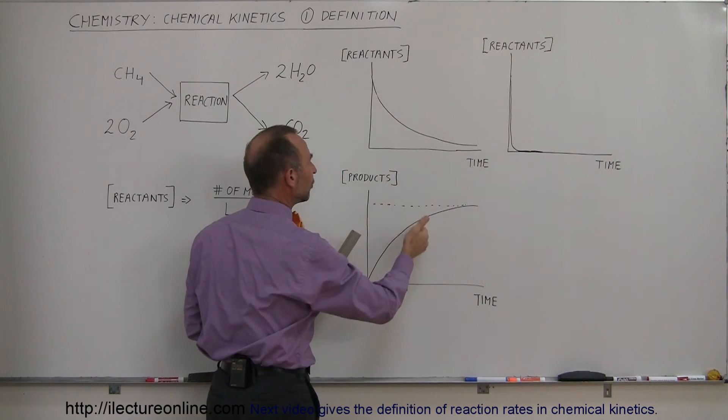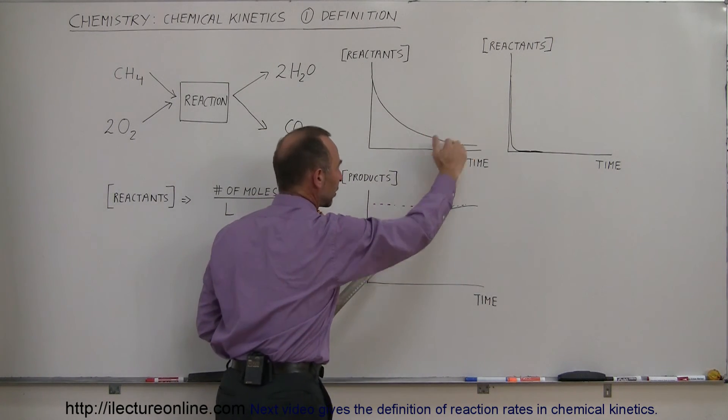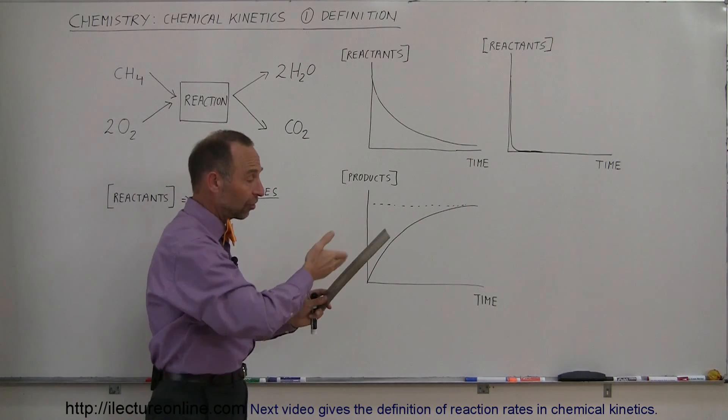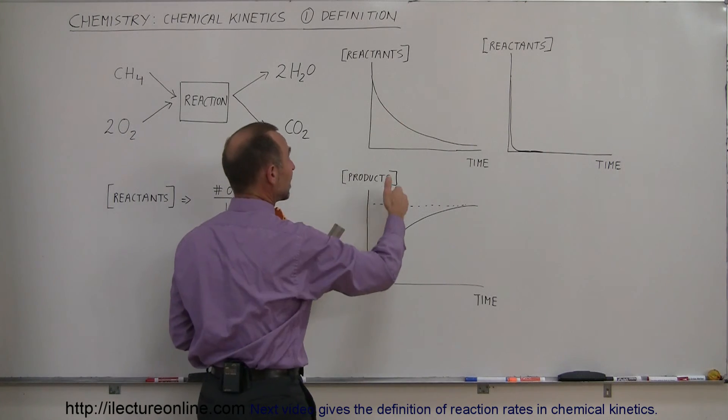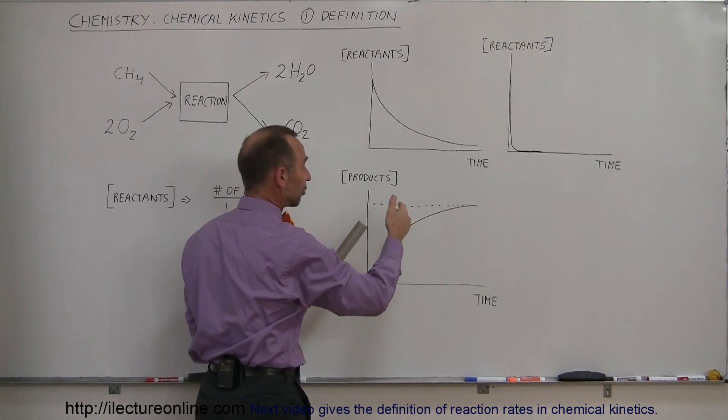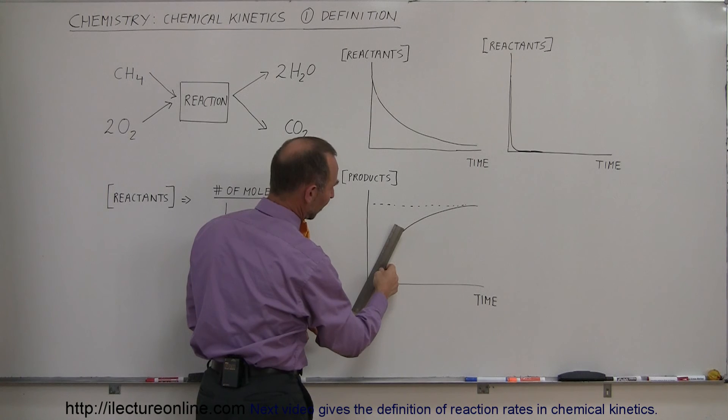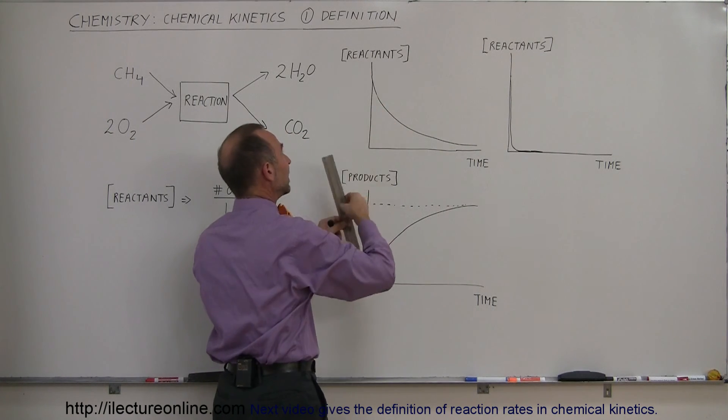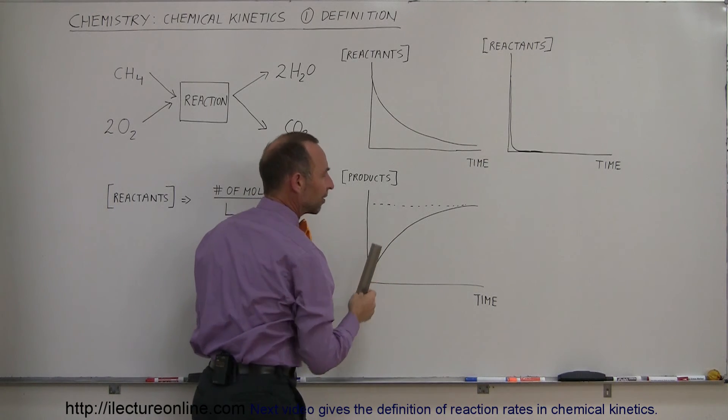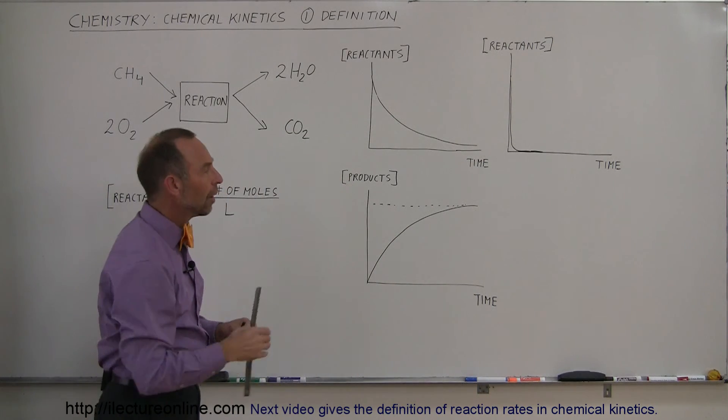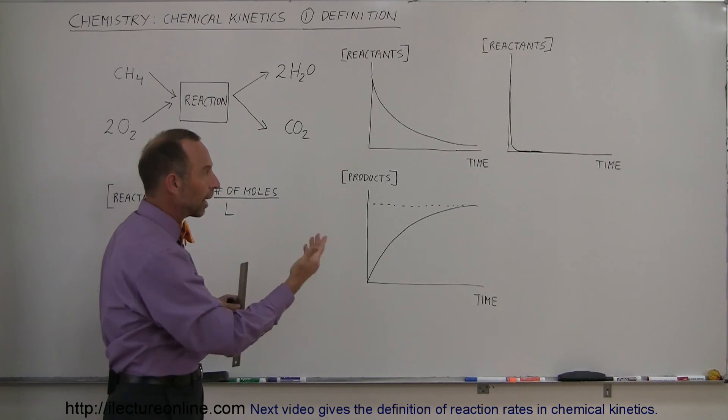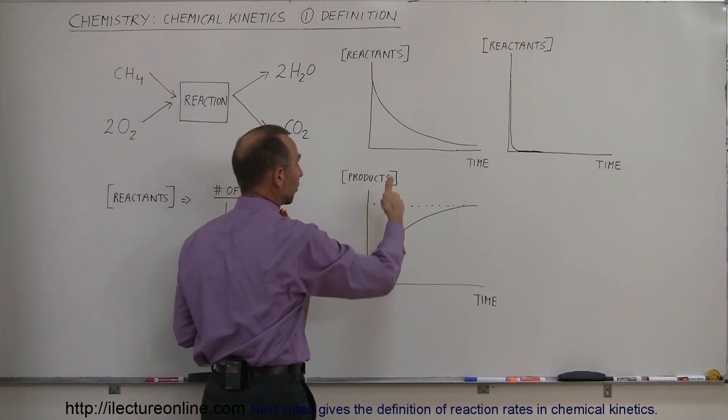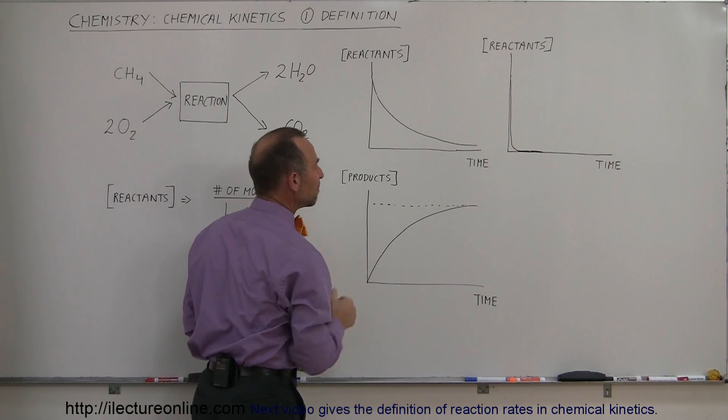Now notice that these curves, even though one slopes downward like this and one slopes upward like that, the actual slope, the steepness of the curve is about the same here and here. This is representing the same reaction. This slope right here and this slope right here will be equal except this will have a negative slope and this will have a positive slope. You'll see in the next video how we actually handle that to compensate the negative or the positive slope. The rate at which reactants are disappearing is typically the rate at which products are being made.